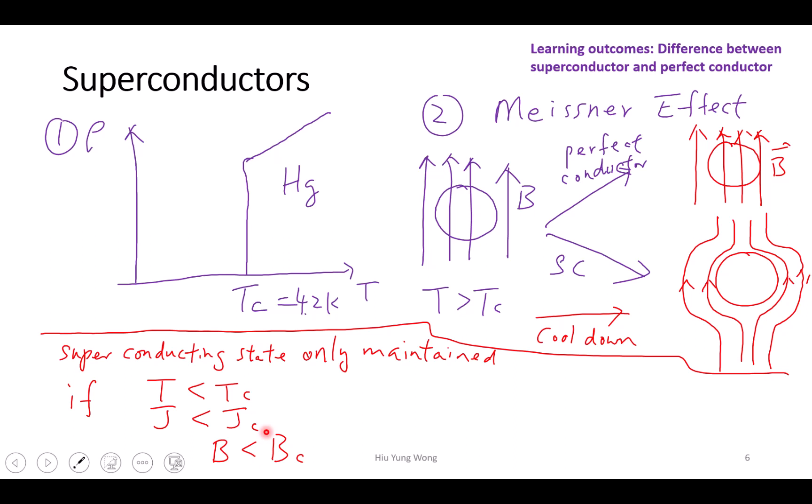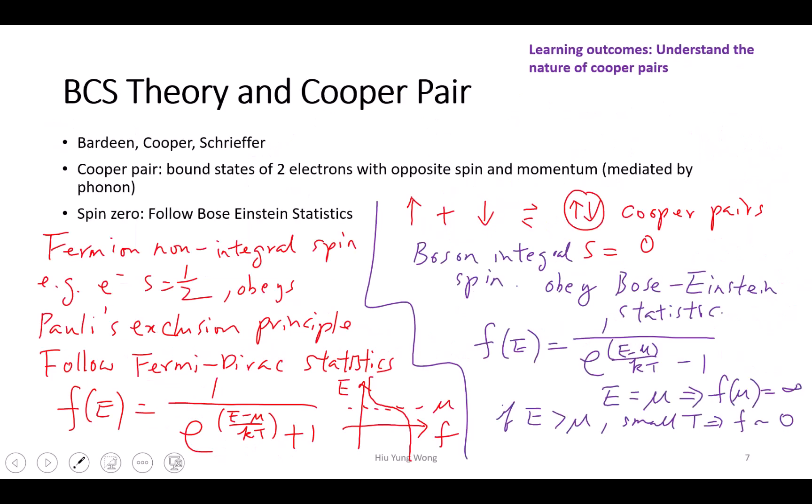We accept that we have the superconductor, so what is the reason? It's a very difficult theory that warrants a Nobel Prize. Of course, I don't understand it fully - if you ask me to go through the math, it's possible we can understand, but it's very complicated. We need to understand some basic things.